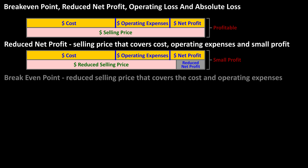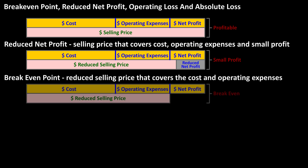The break-even point is the selling price of an item that covers just the cost of the item, plus any overhead, and does not include any profit, as you see in this chart.